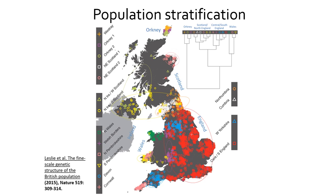The type of gene-environment correlation that has received the most attention in genome-wide association studies is population stratification, which occurs when different subpopulations that differ genetically also differ in their environments, and those environments affect the trait in question. I'm showing here an image of the different genetic clusters present within the United Kingdom, which demonstrates that even in a relatively homogenous population, distinct genetic clusters exist. And if those genetic clusters differ in their environments for a particular trait, that could lead to biases in SNP effect estimates when those SNPs are differentiated between the different subpopulations.